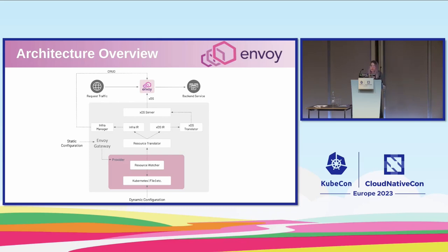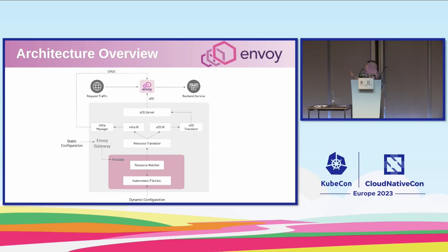A little about the architecture at a high level. At the bottom we have the idea of a provider, which is responsible for watching the different types of configuration — static and dynamic — and then translating it into the XDS IR and the Infra IR. We have this set up so we can have different providers for the different places you might be pulling config from. We have a Kubernetes provider to watch Kubernetes resources, a file provider, and in the future we can add new providers to watch configurations from different places. We split it up into two IRs as an internal API, which helps us separate the internal API from the public-facing API and decouple how you're configuring it from what we do internally.